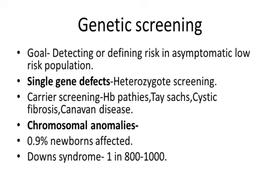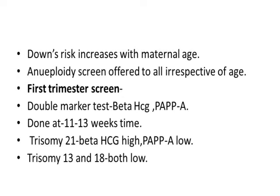Chromosomal anomalies are seen in less than one percent of newborns. The most common is Down syndrome, with an incidence of around 1 in 800 to 1000 live births. Risk increases with maternal age — at 35 years it rises to around 1 in 400, and at 40 years nearly 1 in 100. Aneuploid screening should be offered to all mothers irrespective of maternal age.